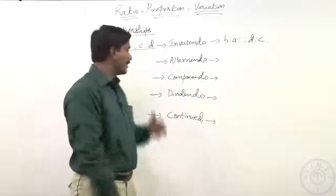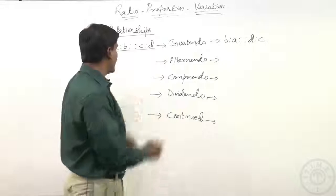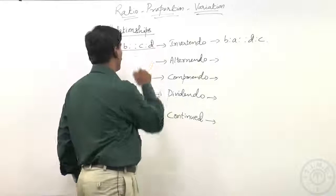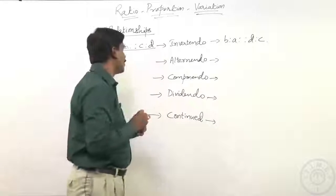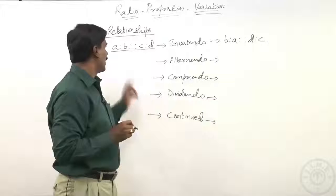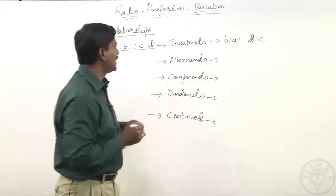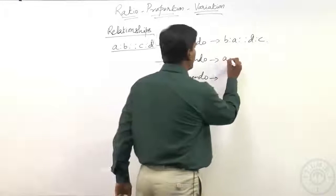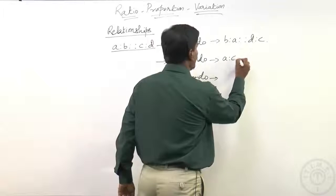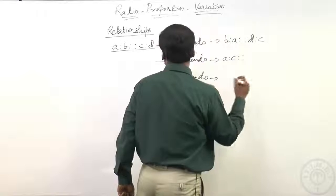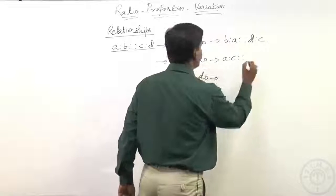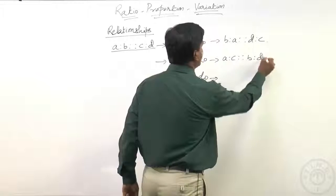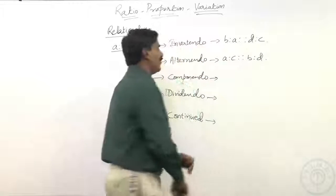Alternendo means if we interchange the b and c terms and get the ratio. So what we can say is a is to c in proportion with b is to d — that is what we call alternendo.